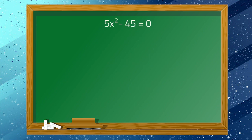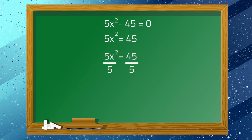Let's have 5x² - 45 = 0. To solve this, we simply have to transpose negative 45 to the right side. Remember, since we transposed it, we have to change its sign. Now we have 5x² = 45. We still have 5 as our coefficient, so to simplify, we divide both sides by 5. That leaves us with x² = 9, since 45 divided by 5 is 9. Now it's easier to get the square root. Do you know the square root of 9? Our final answer is positive or negative 3.